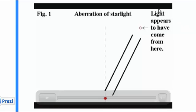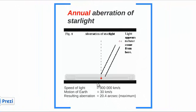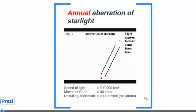As a consequence, light will have appeared to come from a different direction. The way it's calculated goes as follows: the speed of light is 300,000 km per second, the motion of Earth is 30 km per second, and the resulting aberration term is 20.4 arc seconds.